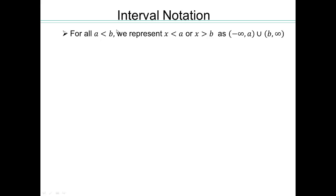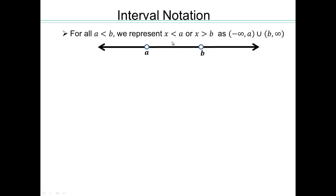For all a smaller than b, we represent 'x is smaller than a or x is bigger than b' as: open bracket negative infinity to a — this represents x less than a — union open bracket b to infinity. The 'or' is represented by the union symbol (U). Graphically, a is to the left of b, both not included. x smaller than a means everything to the left of a, and x bigger than b means everything to the right of b. The U symbol means union, meaning together — you can either be here or there.